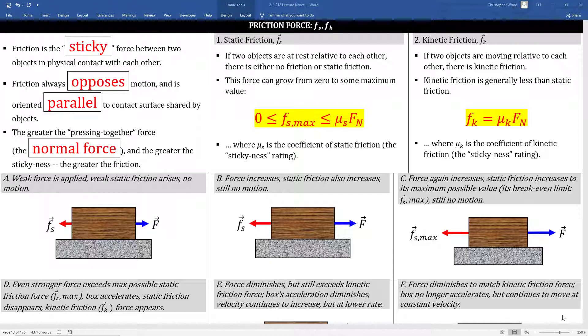So we have two coefficients of friction. Mu sub s is the coefficient of static friction. Mu sub k is the coefficient of kinetic friction. They are both material properties, but they're different. Mu sub k is typically less than mu sub s and you see that yourself when you push on that box. It's hard to get it moving, but once you get it moving, it seems easier to keep it moving.